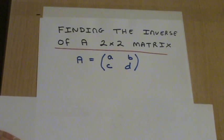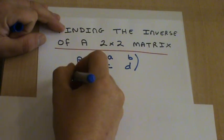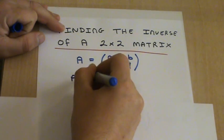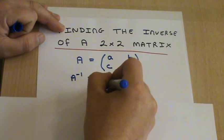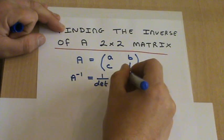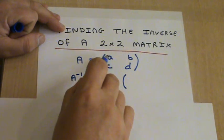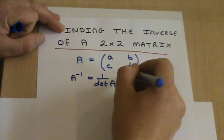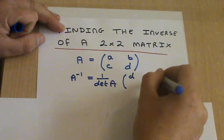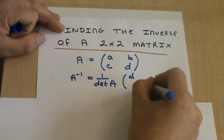So to find the inverse of this matrix, we write it down as A inverse equals 1 over the determinant of matrix A times, and the AD, these are on the leading diagonal, and we just swap these over. So you're going to have D on the top left and A on the bottom right.